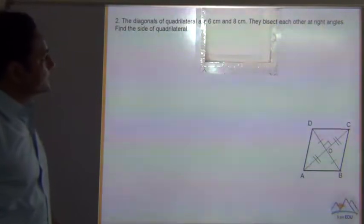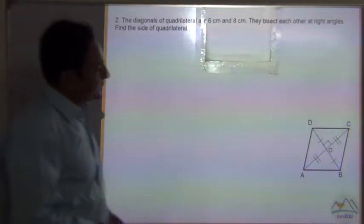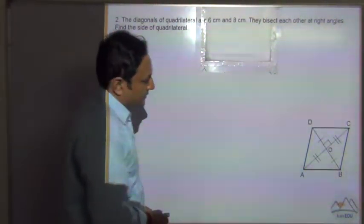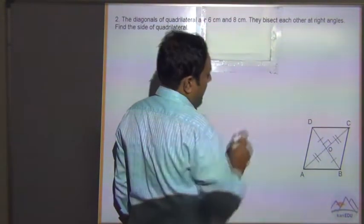Question number 2. The diagonals of quadrilaterals are 6cm and 8cm. They bisect each other at right angle.